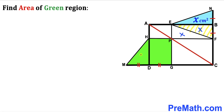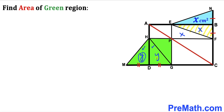Now let's focus on triangle MDH — let's assume its area is Y centimeter square. Let me connect points G and H. We can see that this triangle is congruent to this triangle since base MD equals base DG and their height is the same, so their areas are equal. If this area is Y, then this area is Y as well. Furthermore, GH is the diagonal in this rectangle, so if this area is Y, this other triangle area is Y as well.